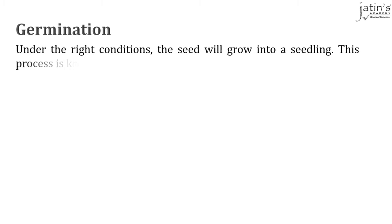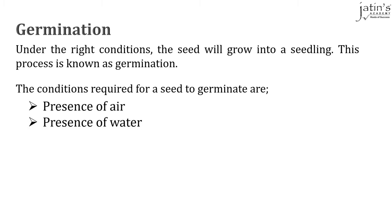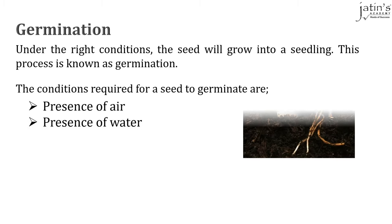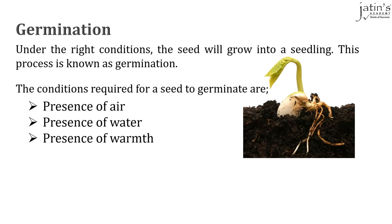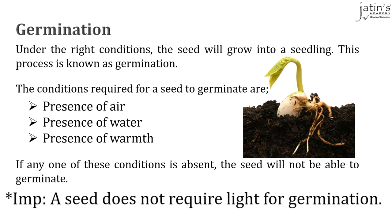Next is the process called germination. Under the right conditions, the seed will grow into a seedling. The conditions required for a seed to germinate are: number one, presence of air; number two, presence of water; and number three, presence of warmth. If any of these conditions is absent, the seed will not be able to germinate. It is important to know that a seed does not require light for germination.